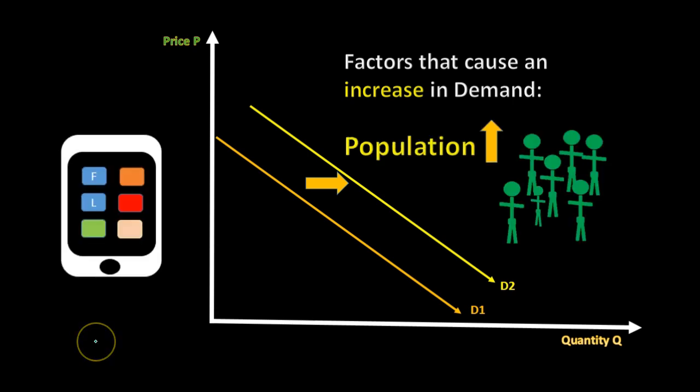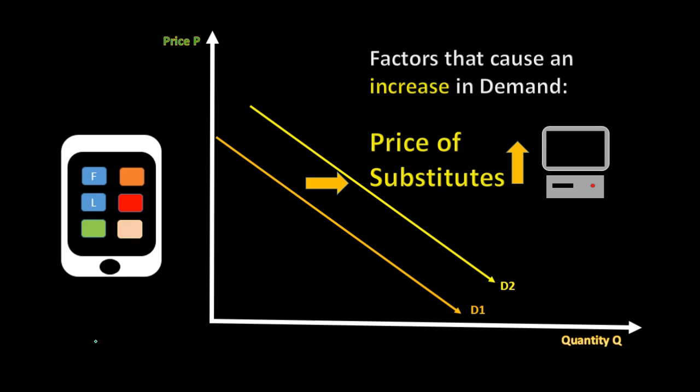Another item that can shift the demand curve to the right is an increase in population. Obviously if the population goes up there are more people who could purchase the particular product, and that's something other than price that could shift the demand curve to the right.